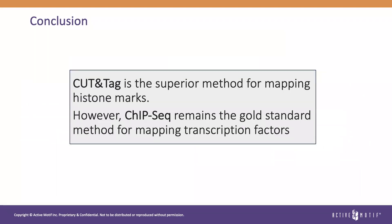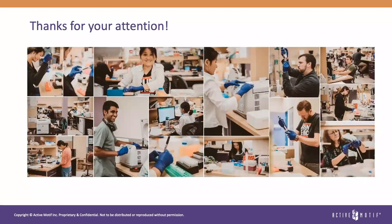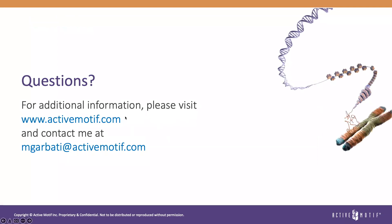In conclusion, Cut-and-Tag is the superior method for mapping histone marks. However, CHIP-seq remains the gold standard method for mapping transcription factors. Thank you for your attention. If you have any questions, please contact me at mgarbati@activemotif.com. For additional information, visit our website at activemotif.com.